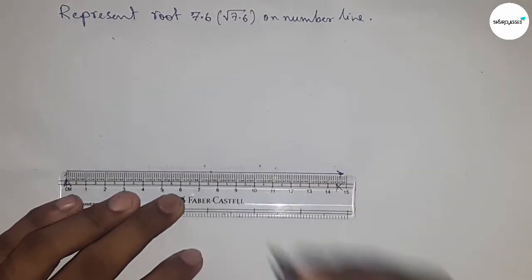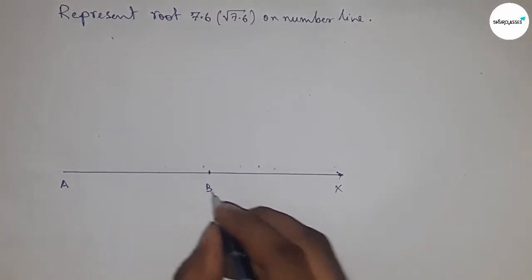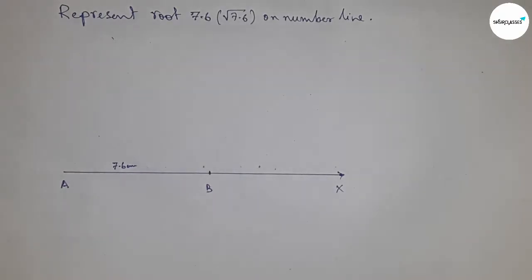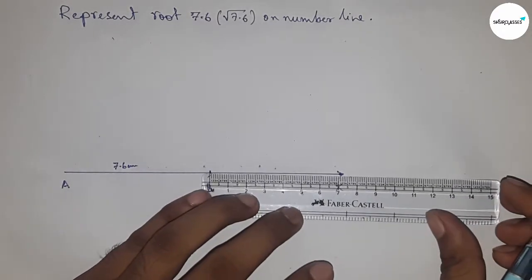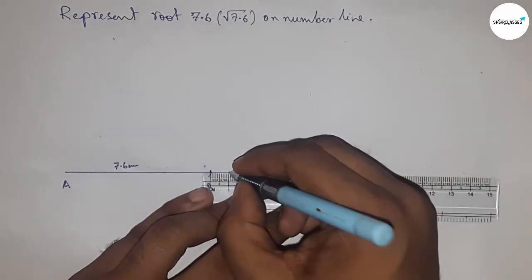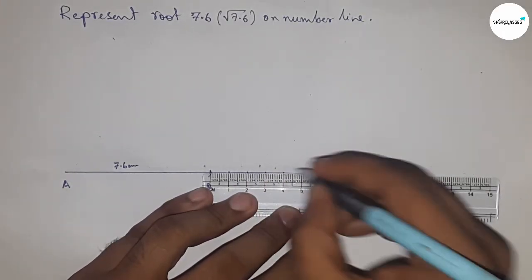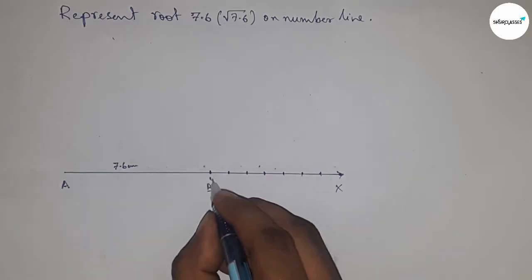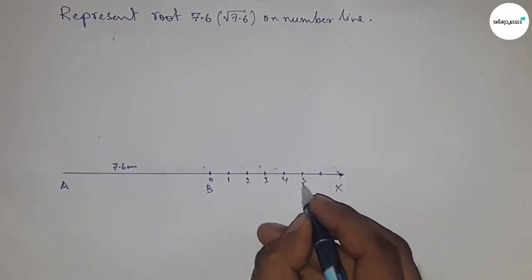This is point B, so AB is 7.6 centimeter. Next, mark the numbers on the line from B to X by using a scale. This is 0, 1, 2, 3, 4, 5, 6, and so on.